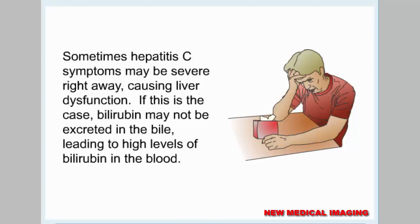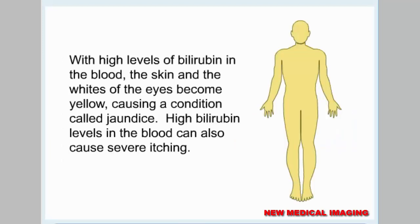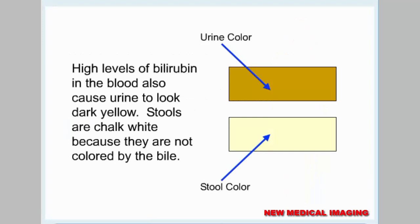Sometimes hepatitis C symptoms may be severe right away, causing liver dysfunction. If this is the case, bilirubin may not be excreted in the bile, leading to high levels of bilirubin in the blood. With high levels of bilirubin in the blood, the skin and the whites of the eyes become yellow, causing a condition called jaundice. High bilirubin levels can also cause severe itching, dark yellow urine, and chalk-white stools because they are not colored by bile.